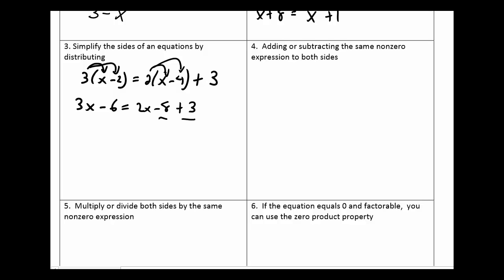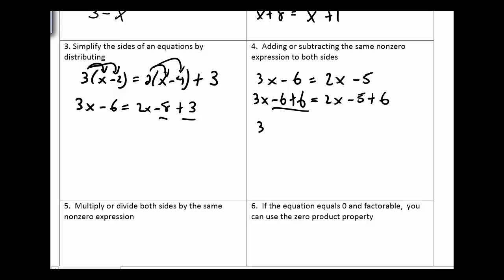We can add or subtract the same non-zero expression to both sides. When I want to get rid of something on one side, I can either add or subtract the same expression to both sides. In this case, I want to add 6, and I can do that as long as I do that to both sides. That part goes away and I'm left with 3x equals 2x plus 1.